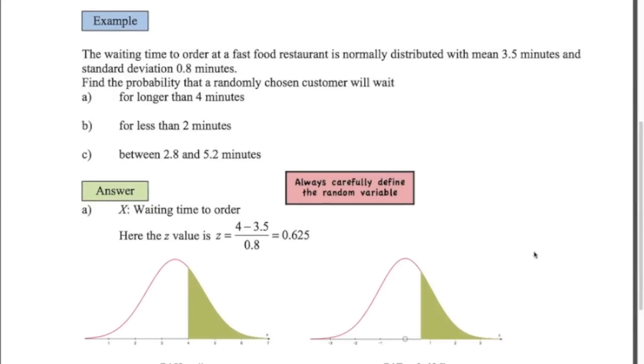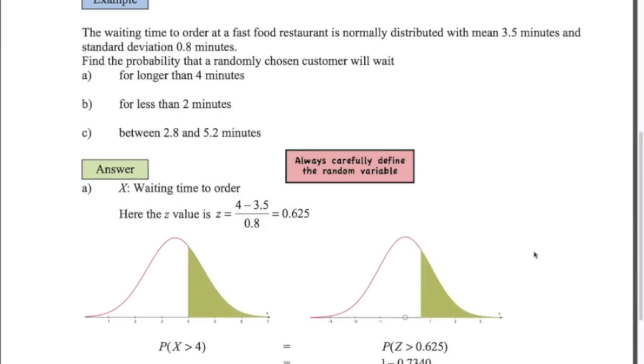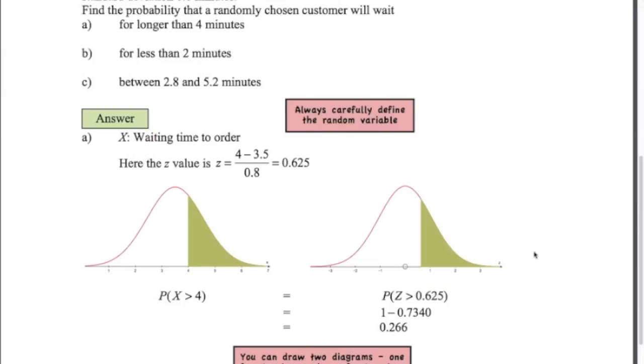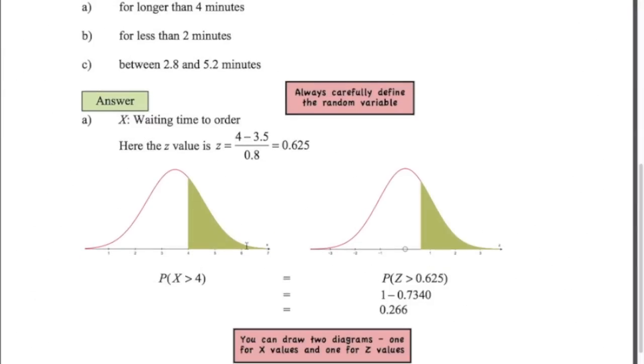For our first question, the probability that it's longer than 4 minutes. On the left here, that's the probability we're looking for. The mean is 3.5, we want to work out the probability of getting 4 and above. Now I'm going to convert this normal distribution into the standard normal distribution using that formula above. x, which in this case is 4, minus the mean 3.5, divided by the standard deviation gives me 0.625.